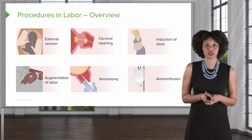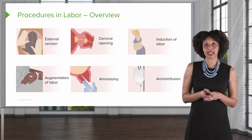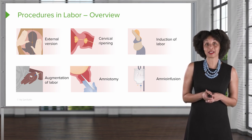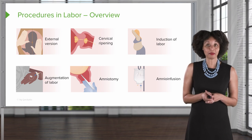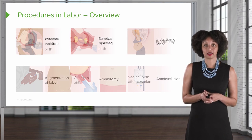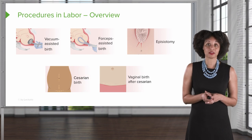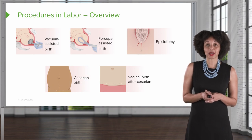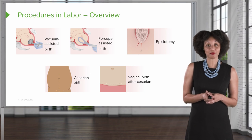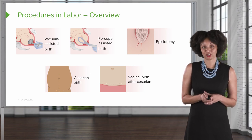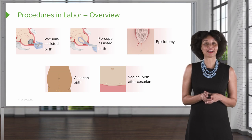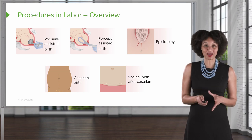They are external version, cervical ripening, induction of labor, augmentation of labor, amniotomy, amnioinfusion, vacuum-assisted birth, forcep-assisted birth, episiotomy, cesarean birth, and finally vaginal birth after cesarean. That's a lot, but I know we can do it.